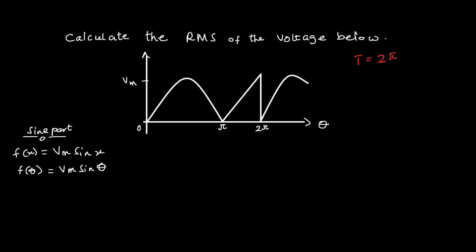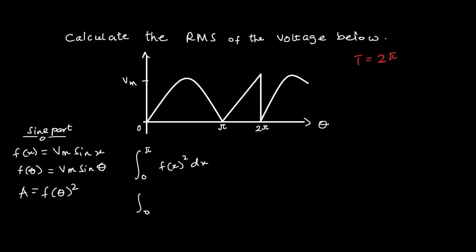The squared area of the sine part is the integral from 0 to π of f(θ) squared dθ. So this gives us the integral from 0 to π of [Vm·sin(θ)]² dθ.